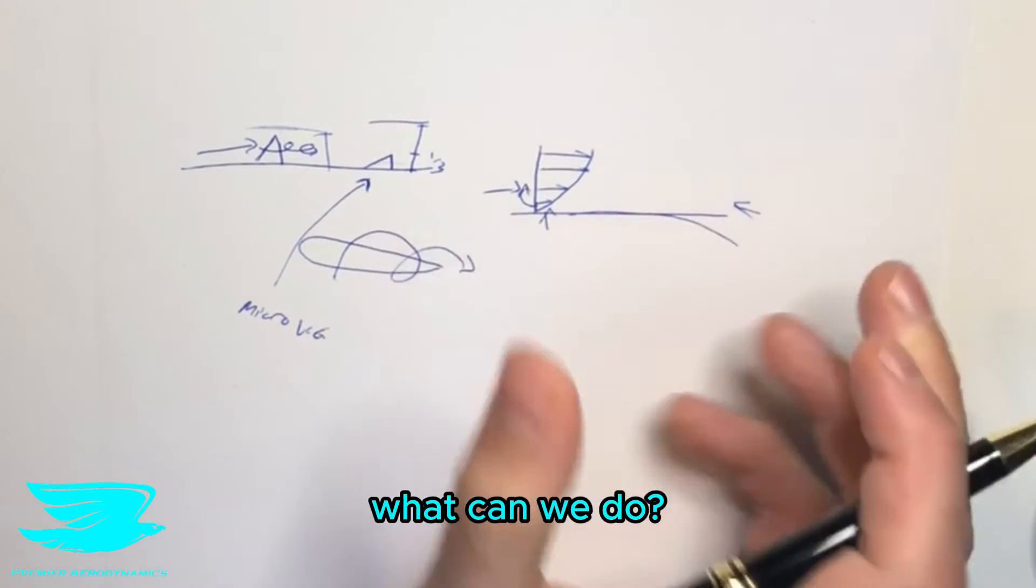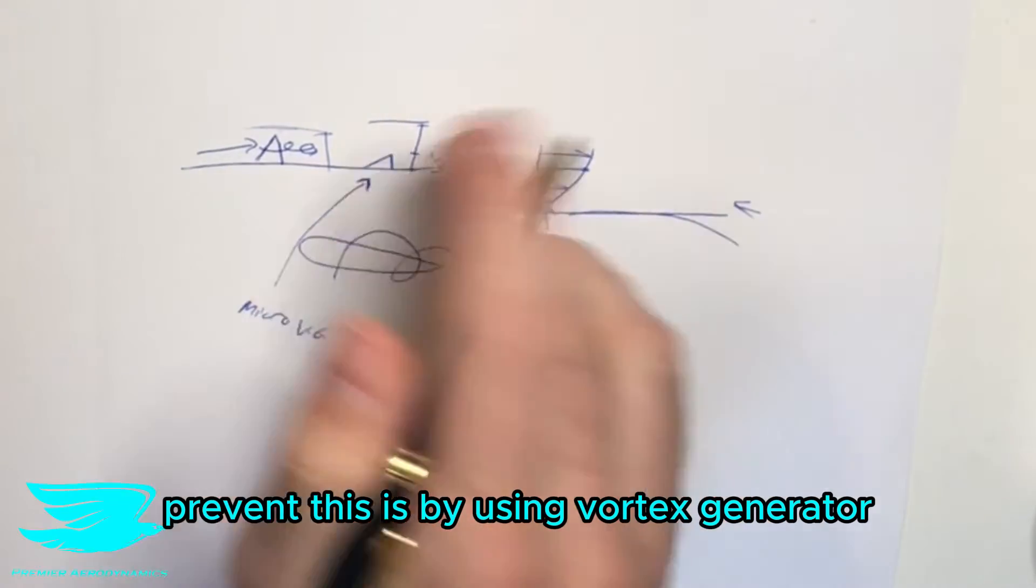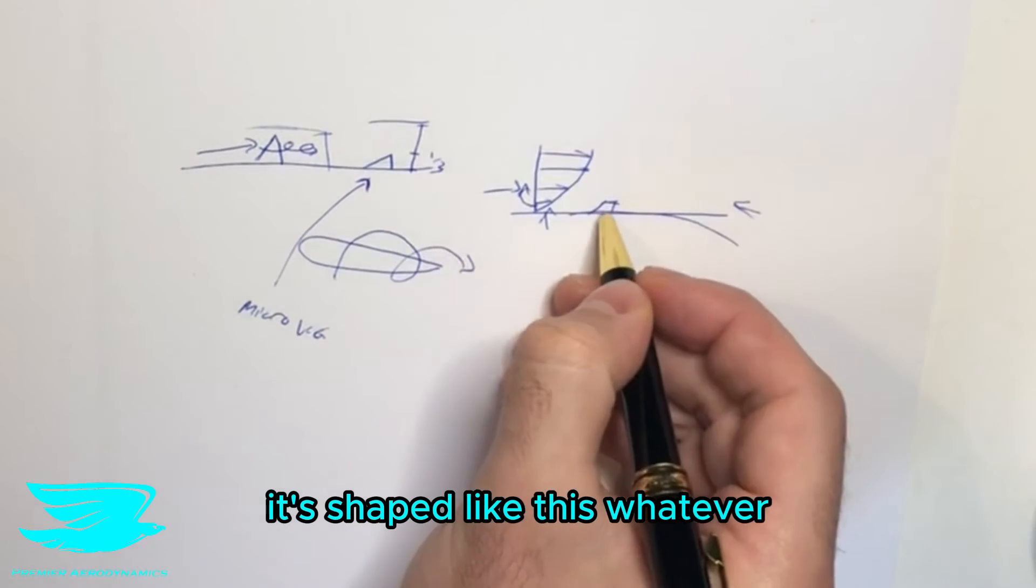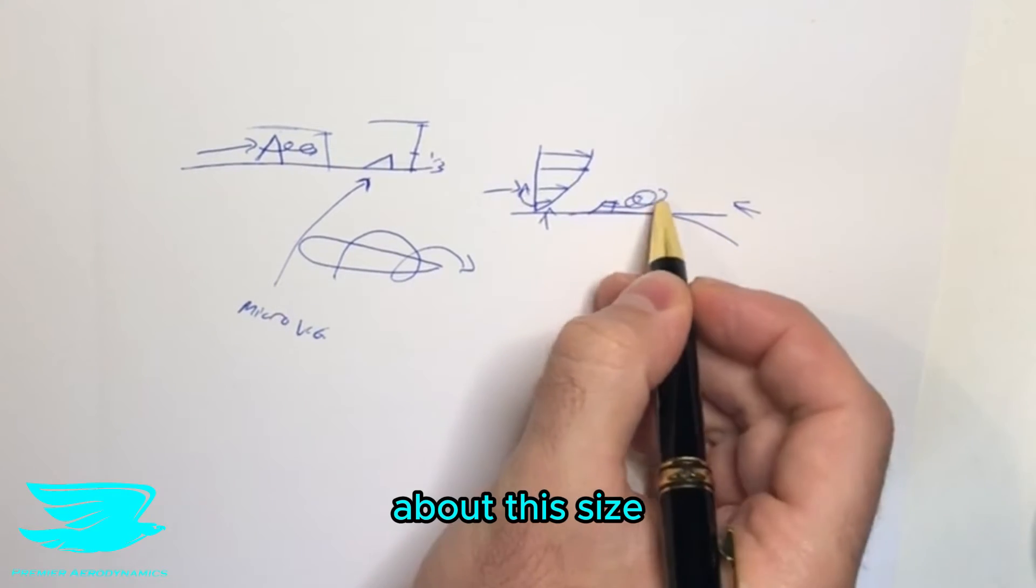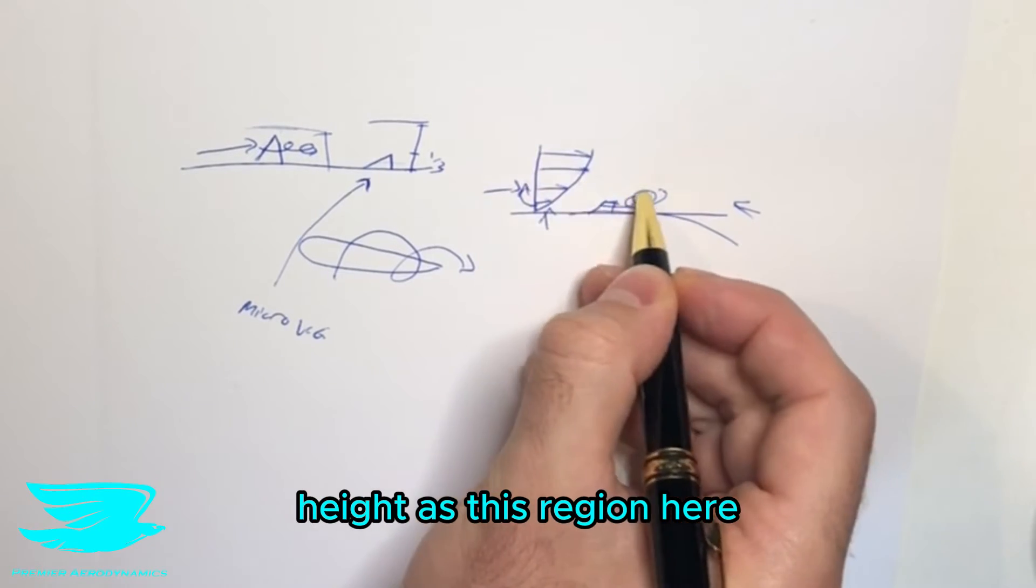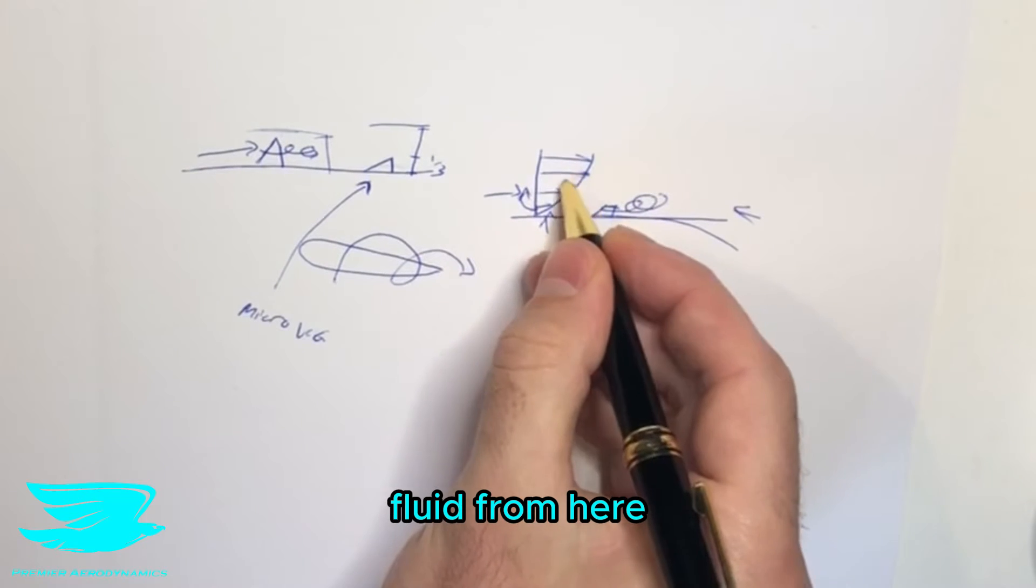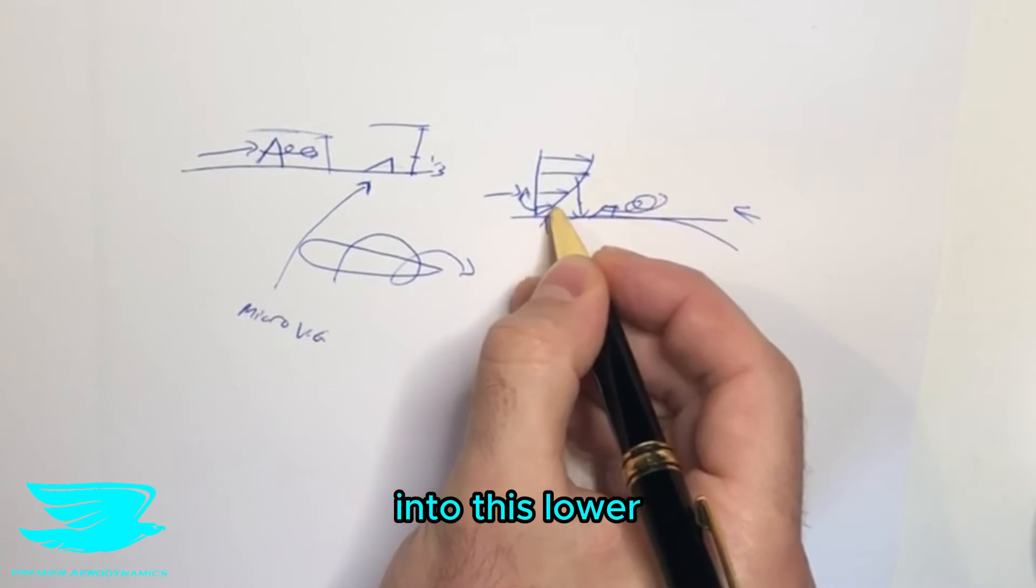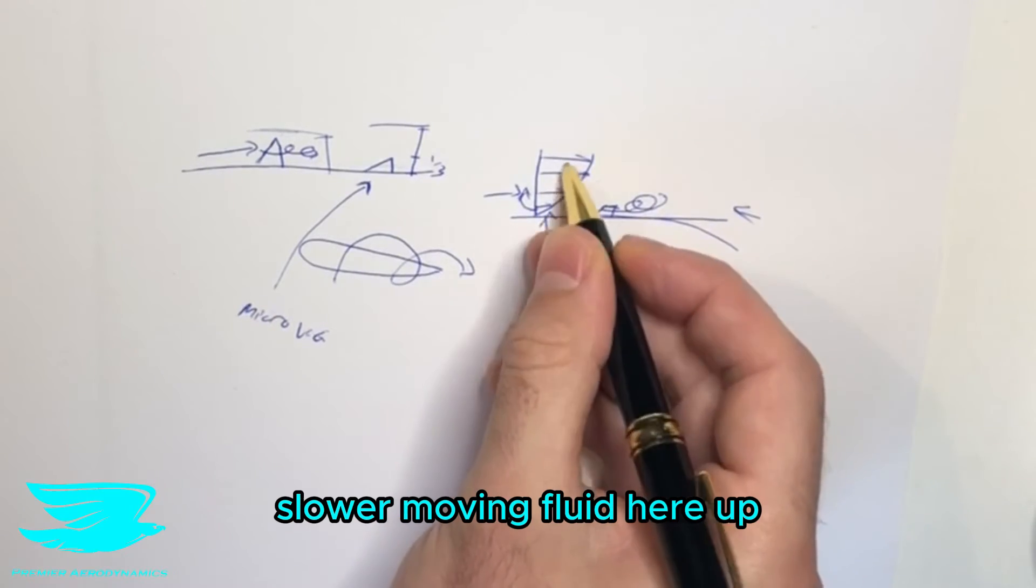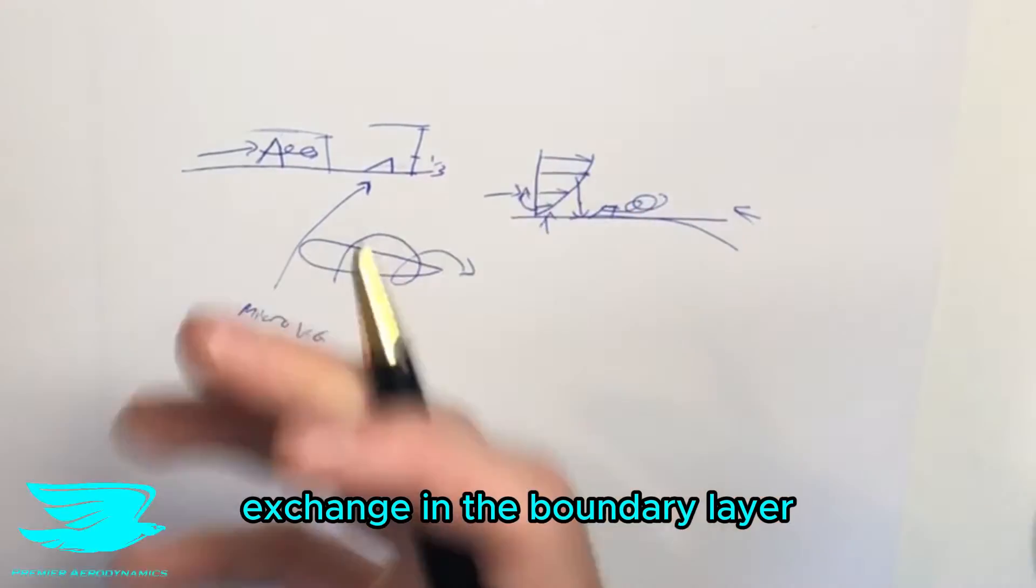So to prevent that from happening, what can we do? Well, one way that we can prevent this is by using vortex generators. So we have a vortex here now, let's say it's shaped like this, whatever. It produces a vortex about this size. So now we can see that this is about the same kind of height as this region here. So we know that the vortex spins around, it's going to suck all this fluid from here and push it down into this lower region and also transport the lower slow moving fluid here up. This is called a momentum exchange in the boundary layer.